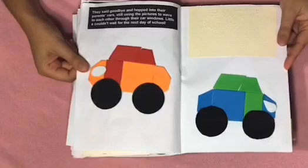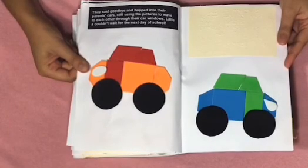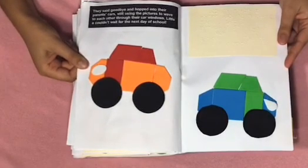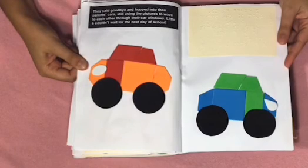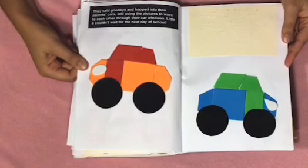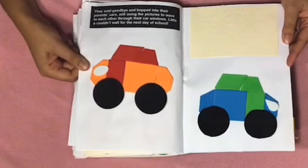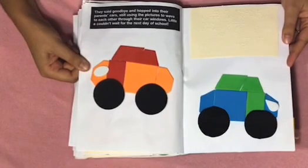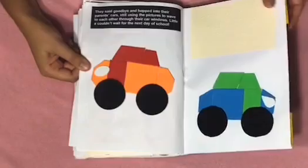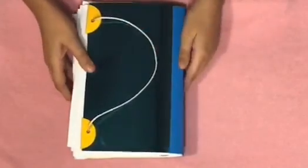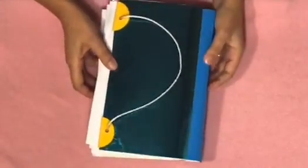They said goodbye and hopped into their parents' cars, still using the pictures to wave to each other through their car windows. Little A couldn't wait for the next day of school. Here we have the orange and red car, and the blue and green car. And that is the end of Little A's First Day.